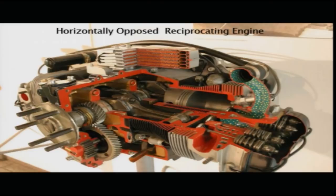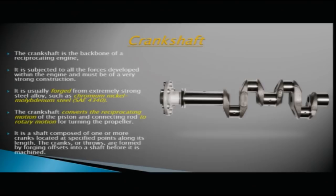The crankshaft is the backbone of a reciprocating engine, which is subjected to all the forces developed within the engine and must be of very strong construction. It is generally made of strong steel alloy such as chromium-nickel-molybdenum steel, also numbered as SAE 4340, and it is of forged construction.